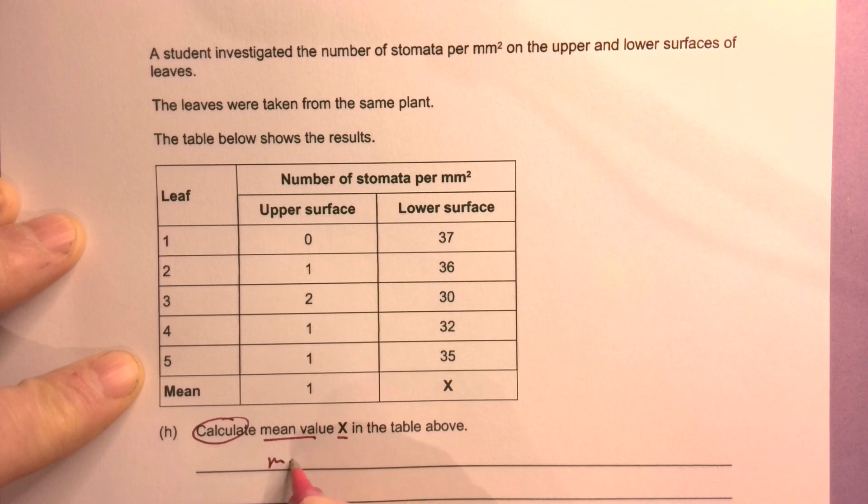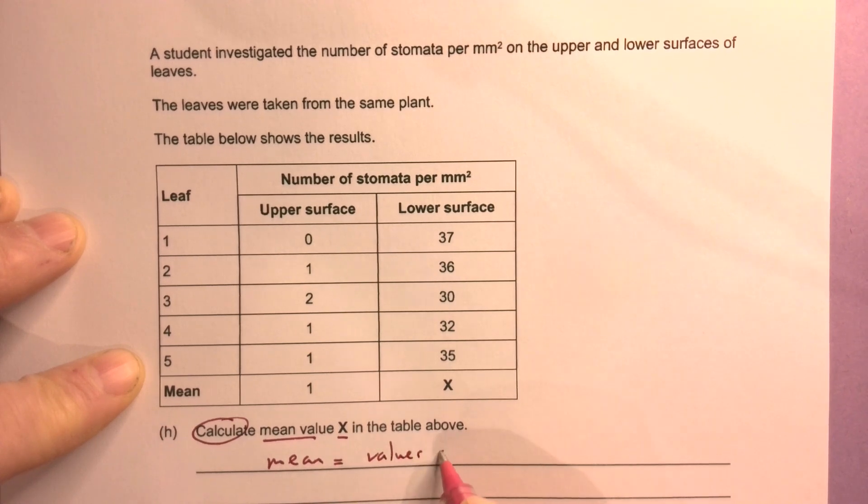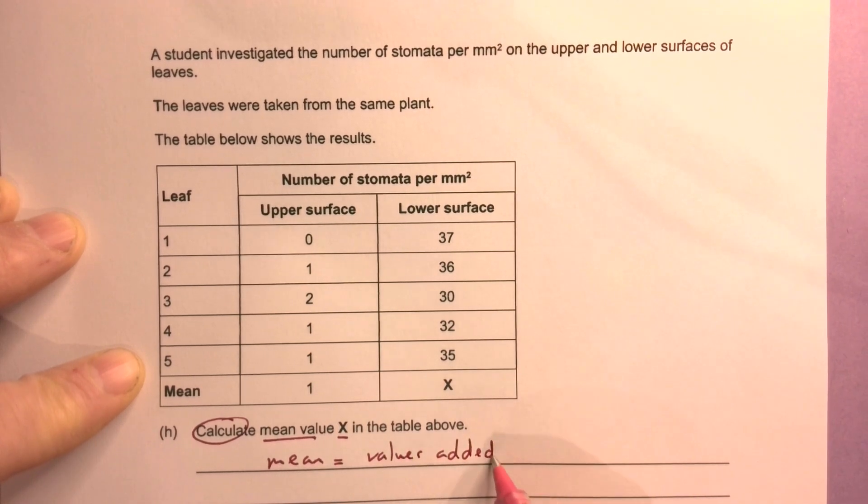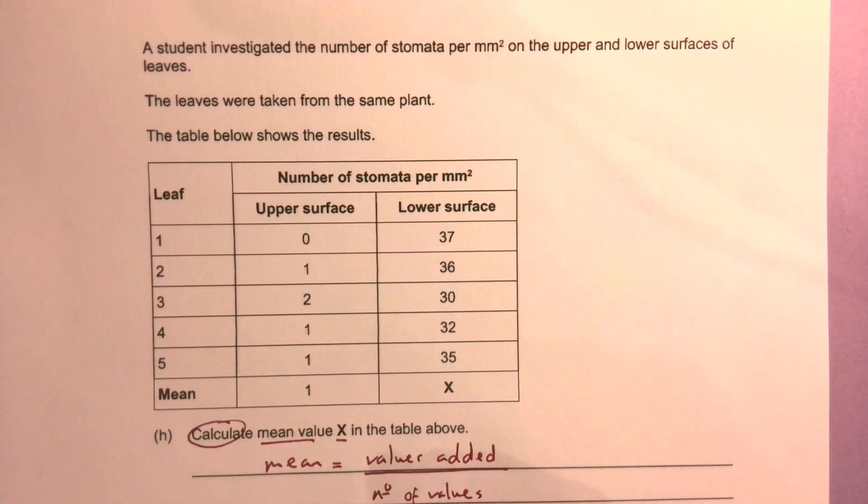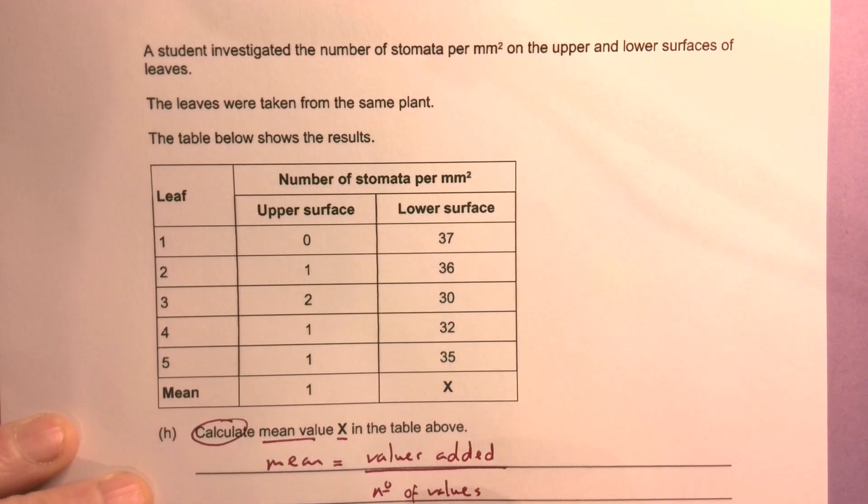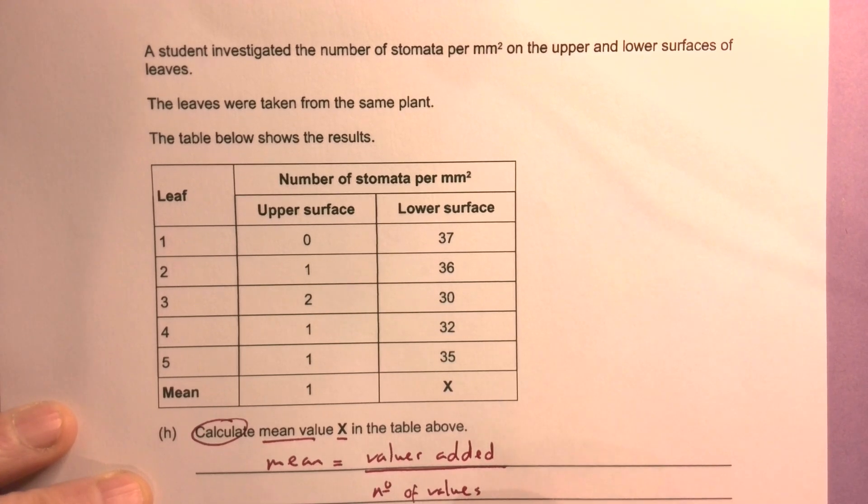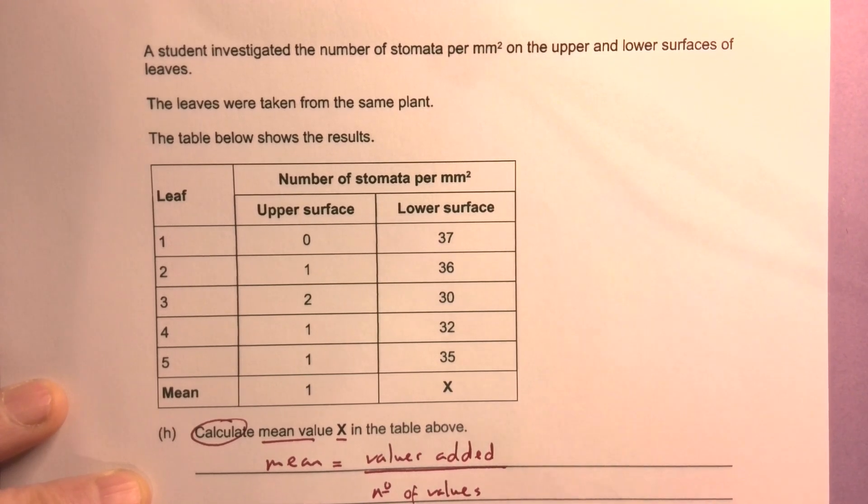Okay, the mean is equal to the values added divided by the number of values, which is going to be equal to... I've got values added: 37 plus 36 plus 30 plus 32 plus 35. That's 1, 2, 3, 4, 5 values in total.